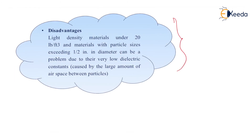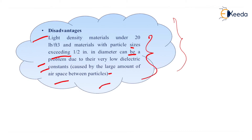There are also some disadvantages of capacitive level measurement. Light density materials under 20 lb per cubic foot and materials with particle size exceeding half an inch in diameter can be problematic due to their low dielectric constant, caused by the large amount of air spread between the particles. For these conditions, accurate results cannot be obtained.